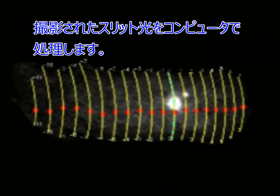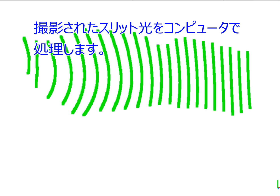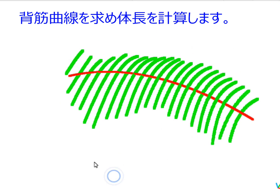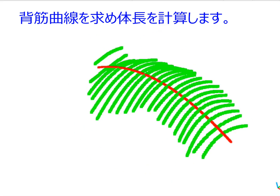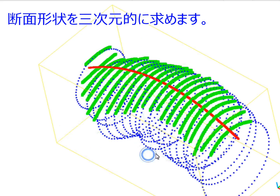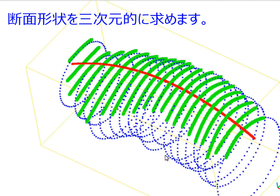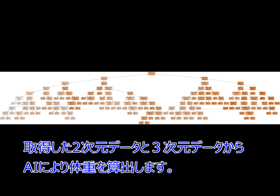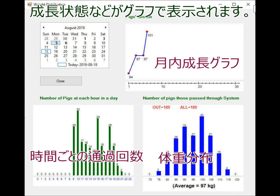The captured slits draw curves on the pig body and are used to reconstruct the three-dimensional shape of the pig. Both two-dimensional and three-dimensional data are used to estimate pig weight using machine learning. The results are shown graphically, and these graphs help with proper pig management.